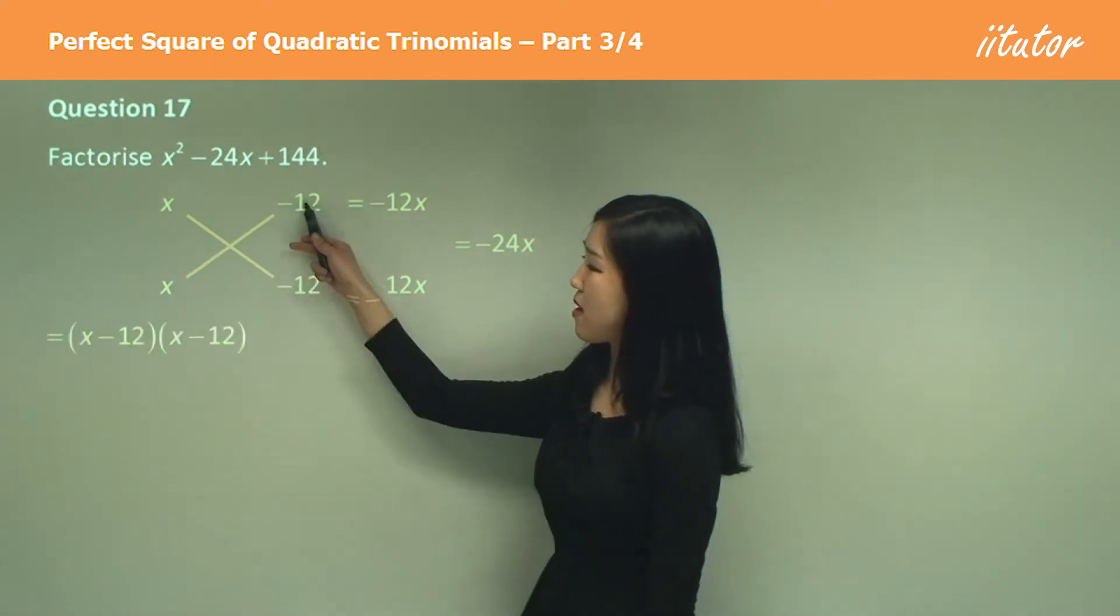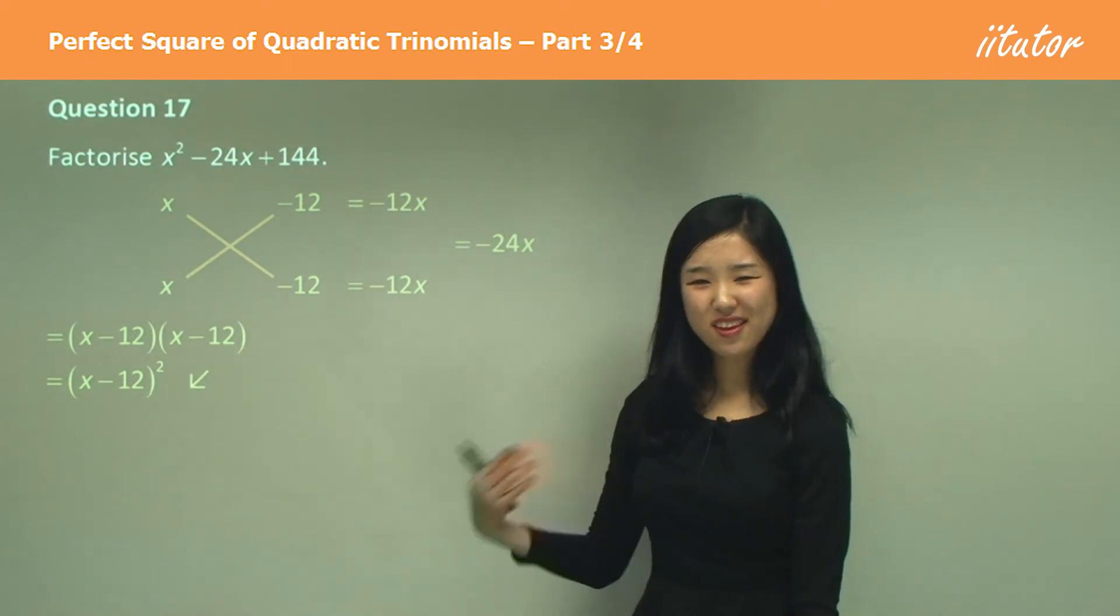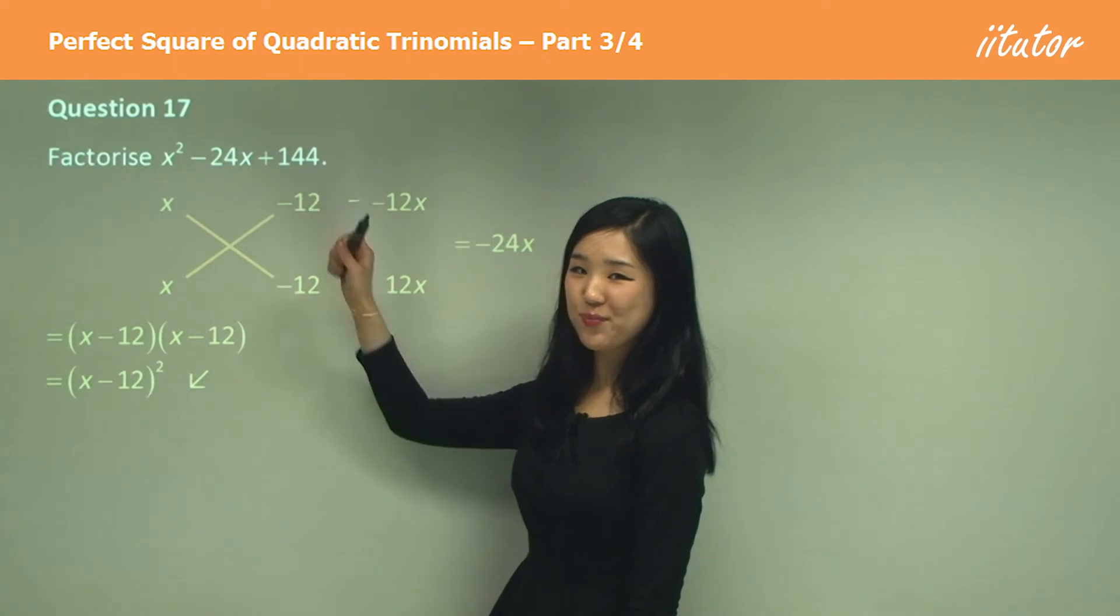Therefore, x minus 12 times x minus 12, which is x minus 12 squared. So this is very, very repetitive, isn't it? As long as you know what squared is 144.